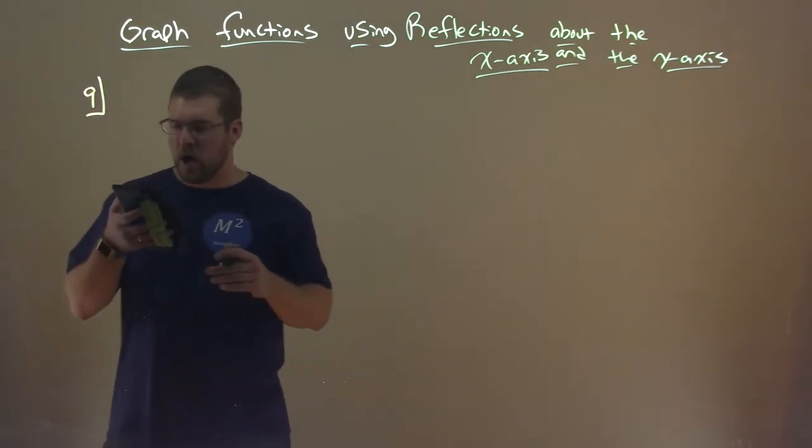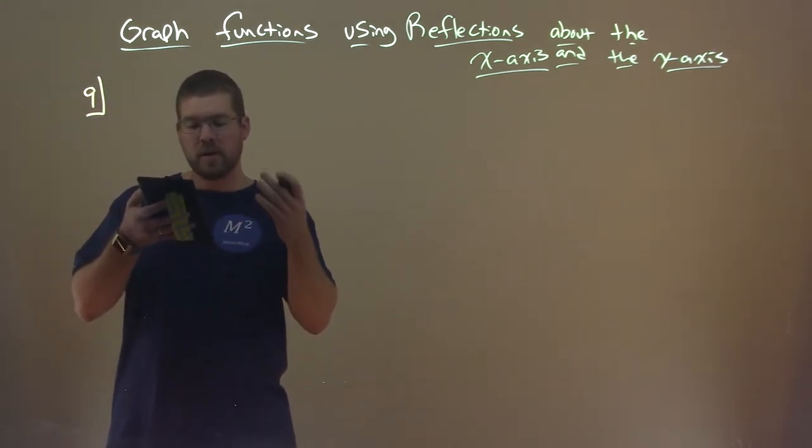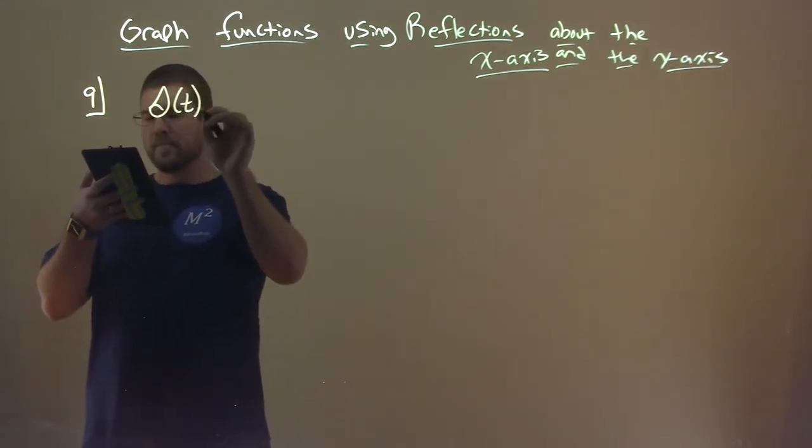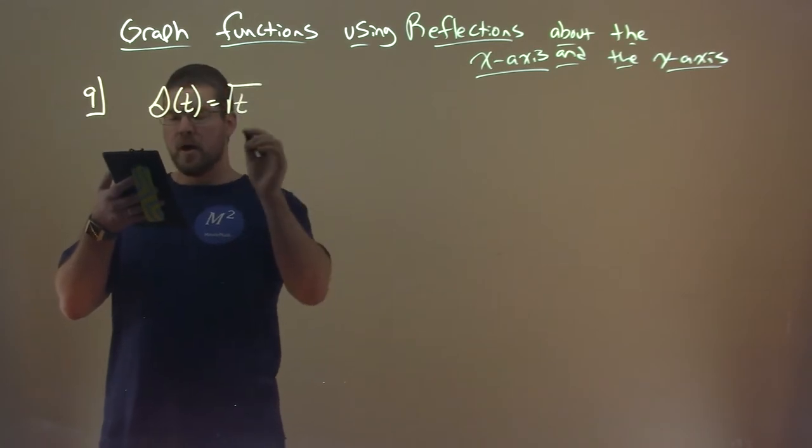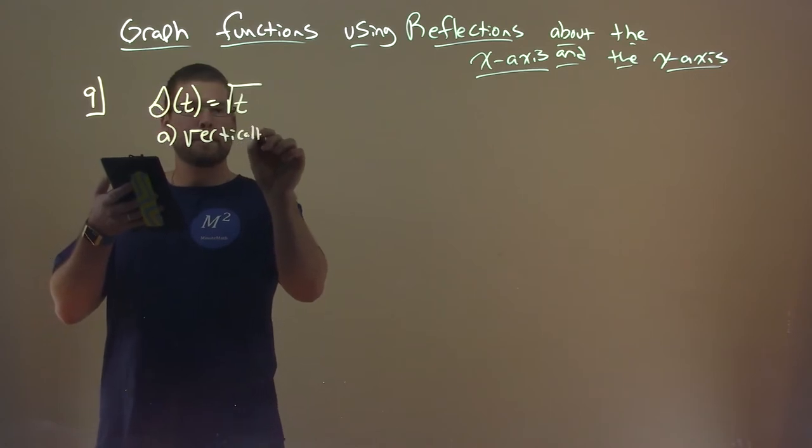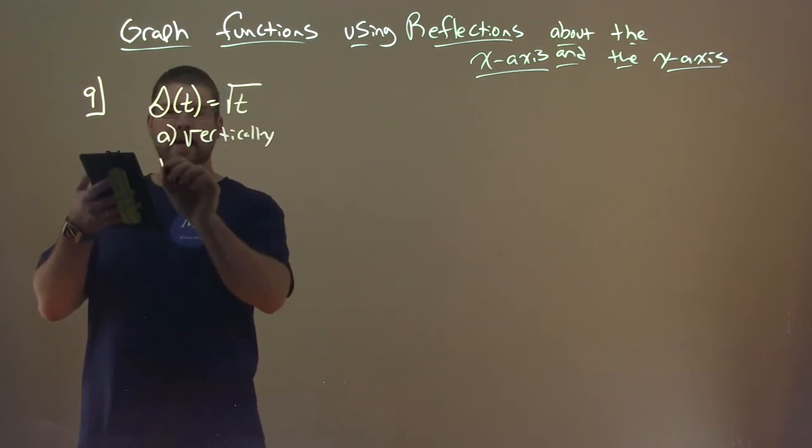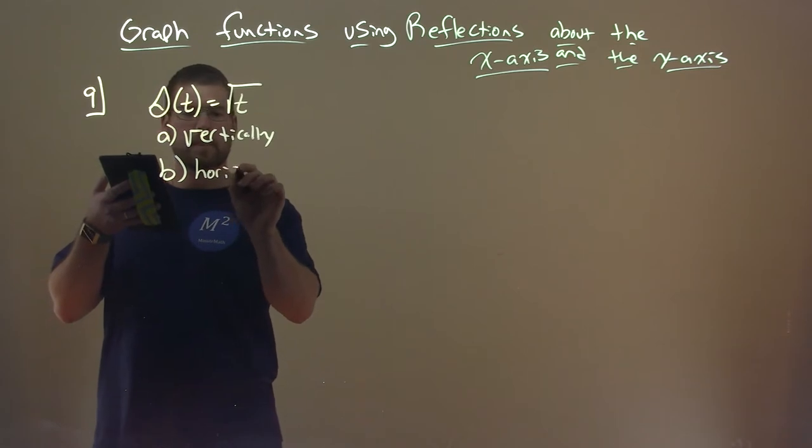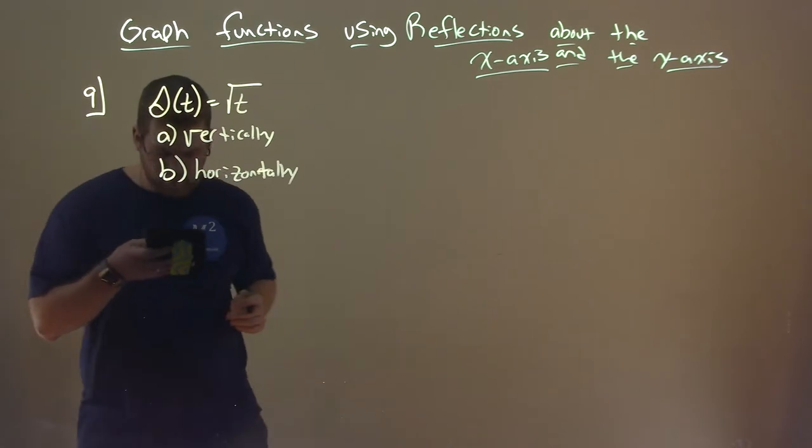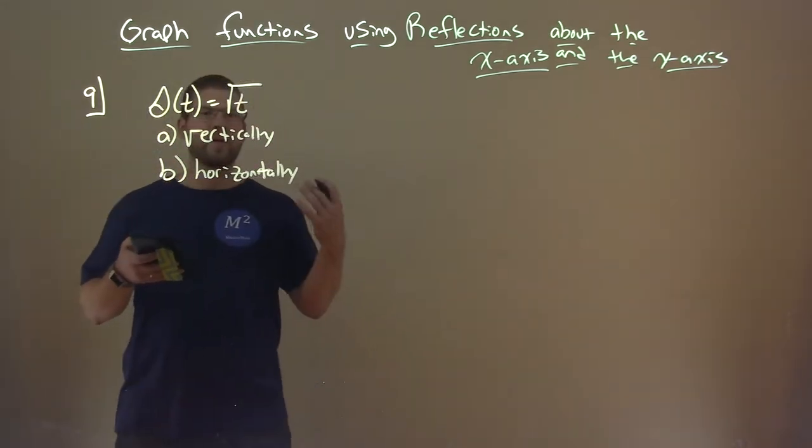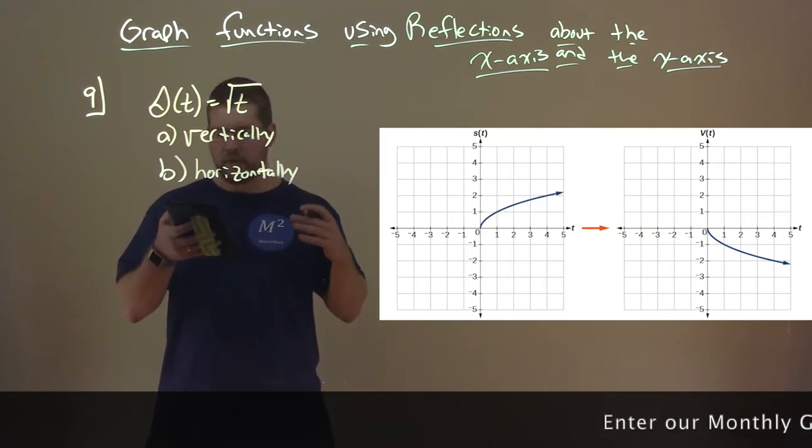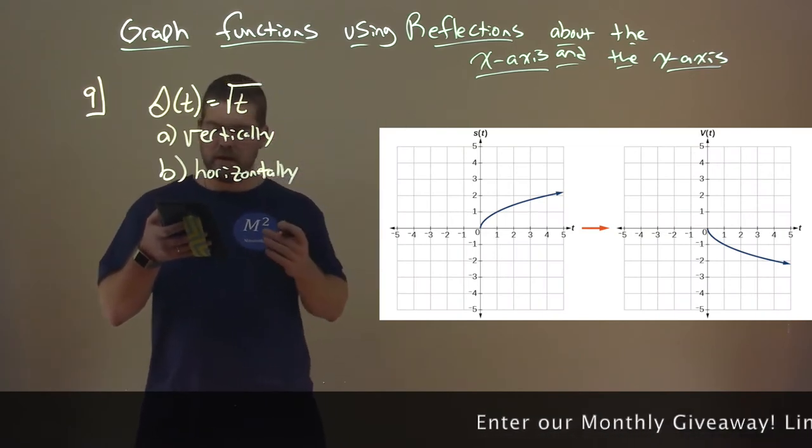Number nine, we're reflecting a graph horizontally and vertically. We're going to reflect the graph of s of t, and it's equal to the square root of t. We're going to do that a vertically and b horizontally.